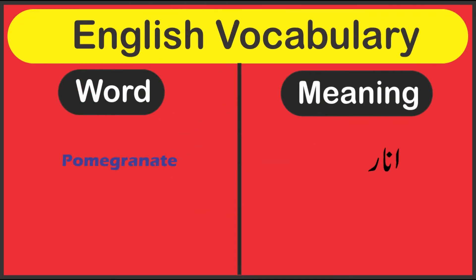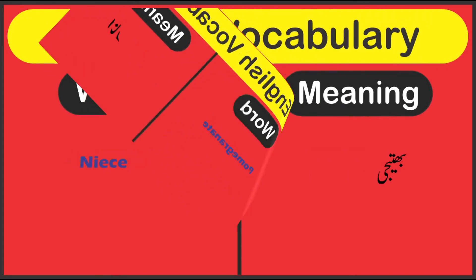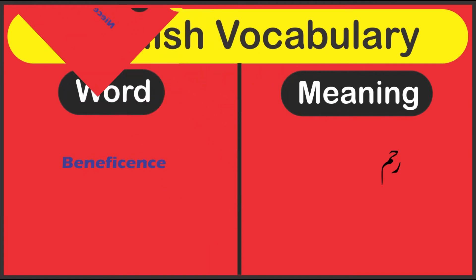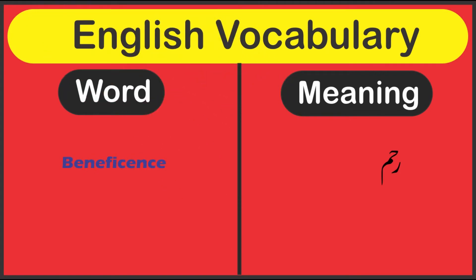Pomegranate: anaar. Niece: batiji. Beneficence: rahm.